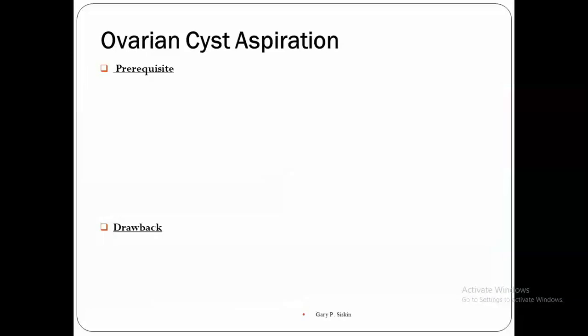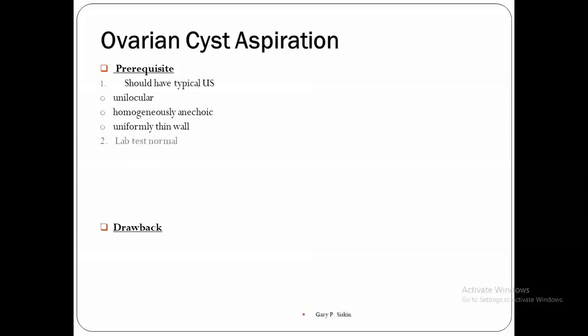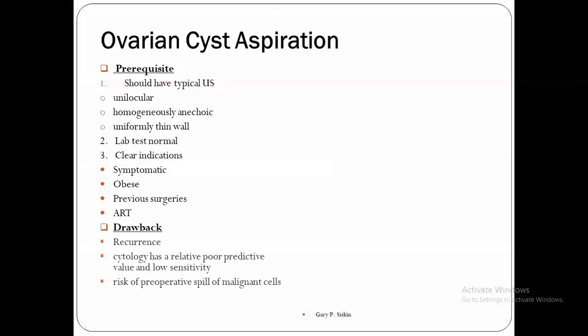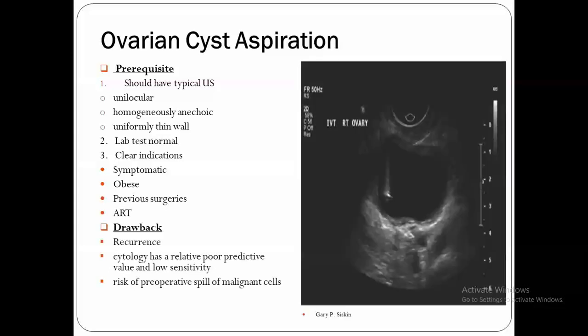Regarding ovarian cyst aspiration as an alternative treatment: before performing it, we must have a typical ultrasound picture, perform CA-125 beforehand, and have a clear indication that it is symptomatic, or that surgery is difficult due to obesity or previous surgery, or that we need to start ART and cannot because of the cyst. However, there are drawbacks: risk of recurrence, cytology gives poor predictive value and low sensitivity, and there is risk of preoperative spillage of malignant cells. The aspiration is performed using transvaginal ultrasound with a pick-up needle.